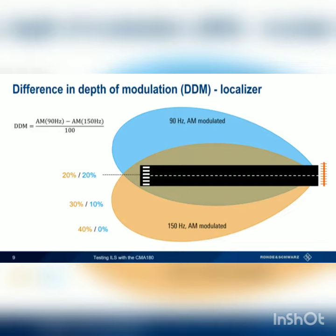Related to DDM is something called SDM, or sum of depth of modulation, which is the sum of the modulation depth of each lobe, again divided by 100.